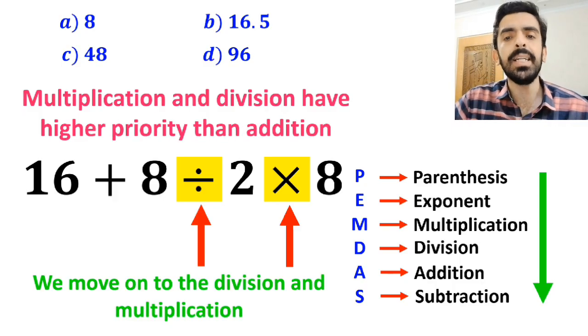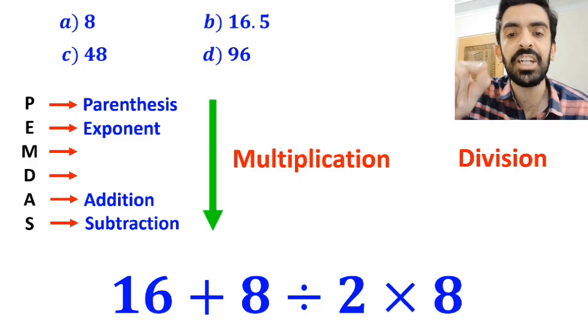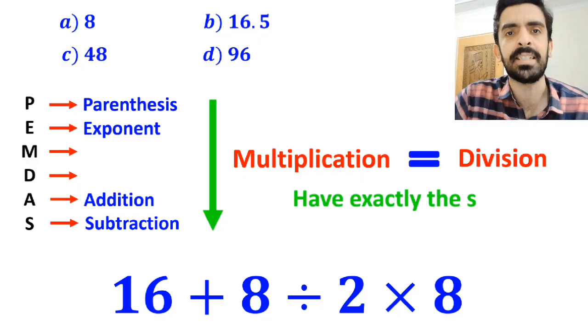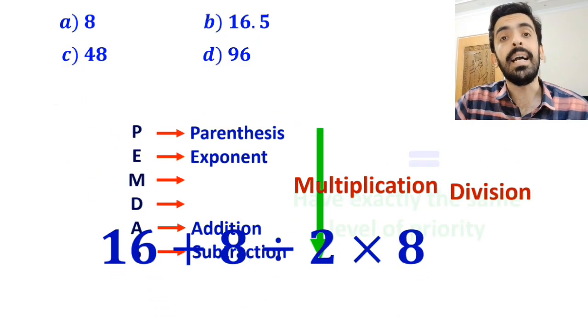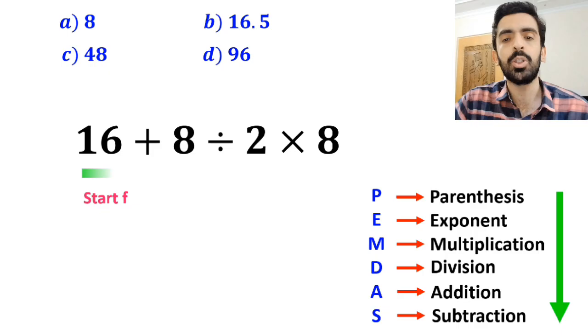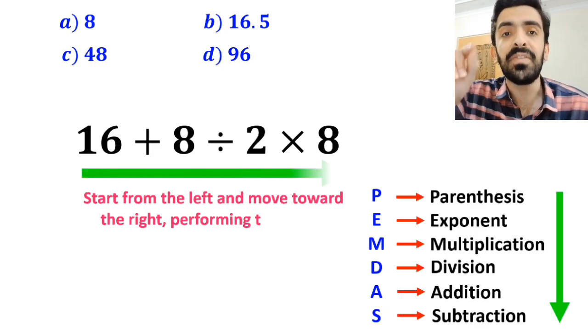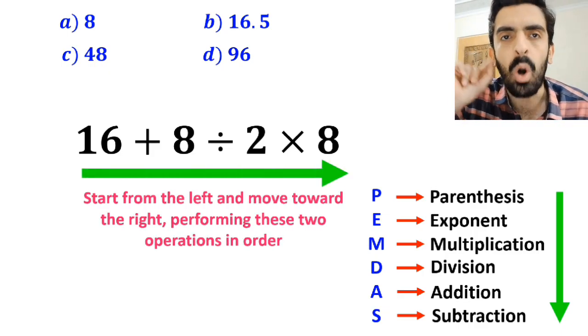However, it's really important to understand that multiplication and division have exactly the same level of priority. In this situation, the best approach is to start from the left and move toward the right, performing these two operations in order.